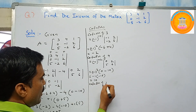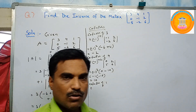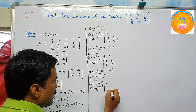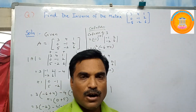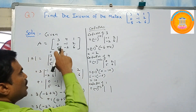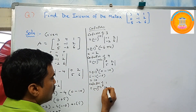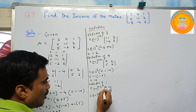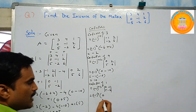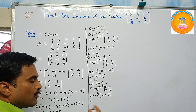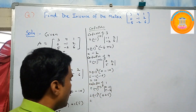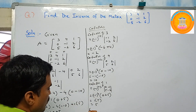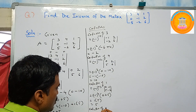Cofactor of one: one is in the first row and third column, so i equals one, j equals three. Minus one to the power one plus three equals four. The minor is the determinant of zero, minus one, five, minus two, which equals zero times minus two minus five times minus one equals zero plus five equals five. Since power four is even, plus one times five gives cofactor of one equals five.